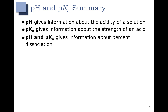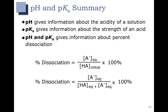Together with pH and pKa, we can get information about percent dissociation — we can tell, at a given pH, how much dissociation we have. Our percent dissociation is calculated as the concentration of A- at equilibrium over the initial concentration of HA. Rearranged, that means percent dissociation equals the concentration of A- at equilibrium over the concentration of HA at equilibrium plus A- at equilibrium, multiplied by 100%.